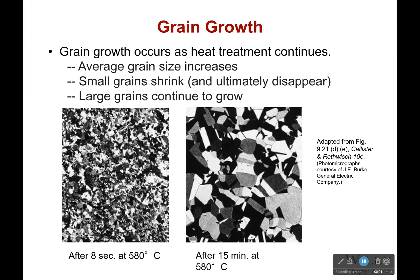Now let's talk about grain growth. Grain growth occurs as we finally reach that last stage of the heat treatment. All of our big grains disappeared — they were eaten by these randomly oriented, not cold worked, small grains. However, small grains, very very small grains, will eventually disappear. Why is that happening? It's because some of their atoms are going to larger grains nearby, and these larger grains are getting bigger and bigger.